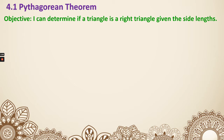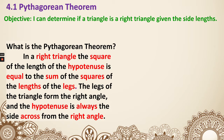We will first learn how to determine if a triangle is a right triangle given the side length. So what is the Pythagorean theorem? In a right triangle, the square of the length of the hypotenuse is equal to the sum of the squares of the length of the legs. There are some quite technical terms, very mathematical, so let's see what they actually mean.